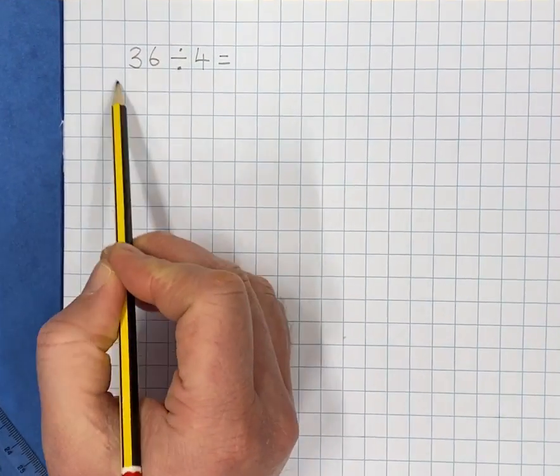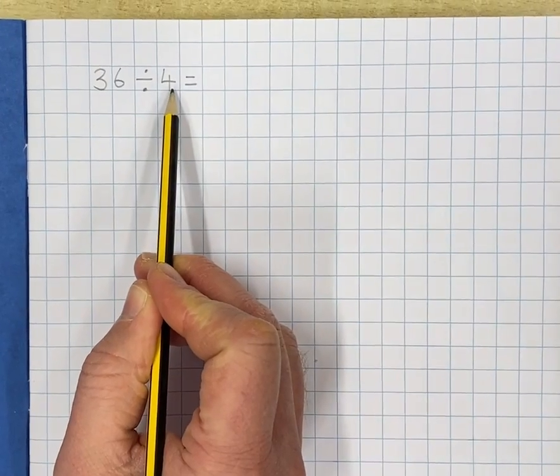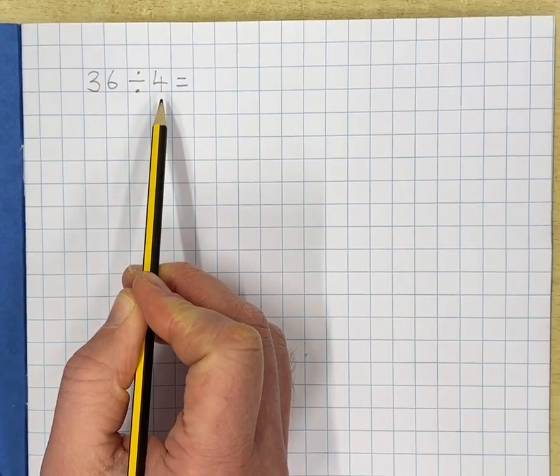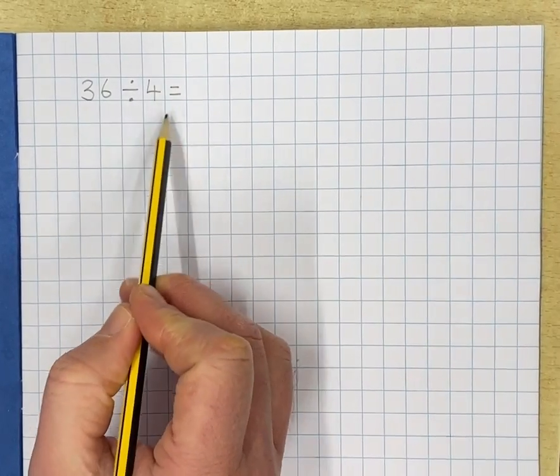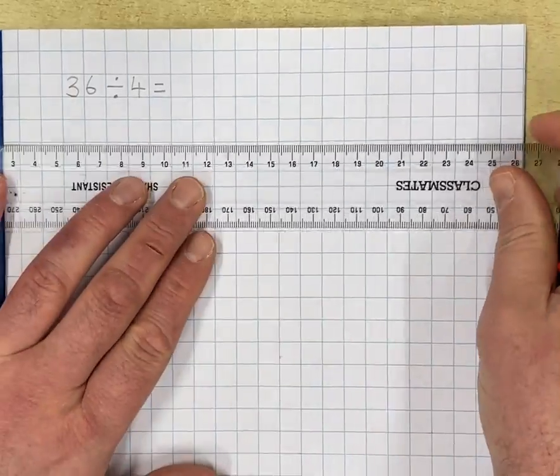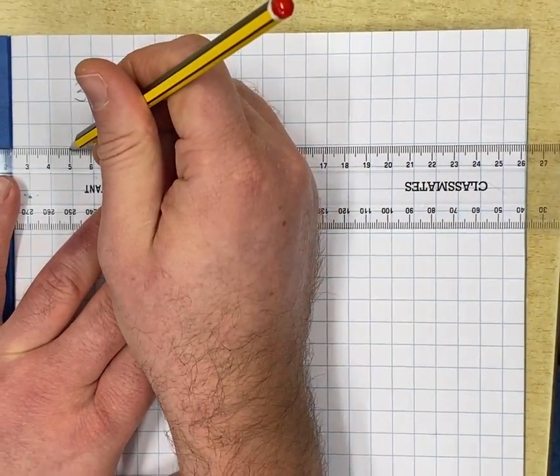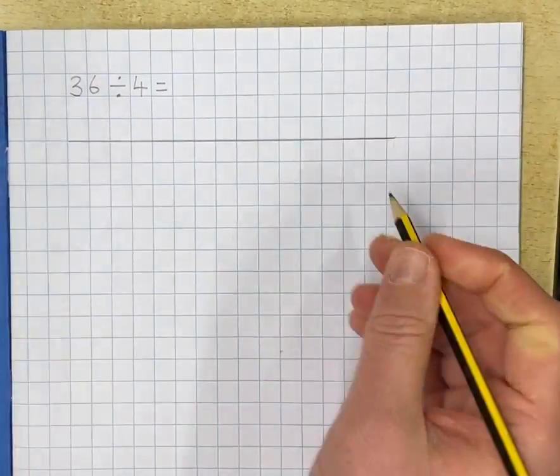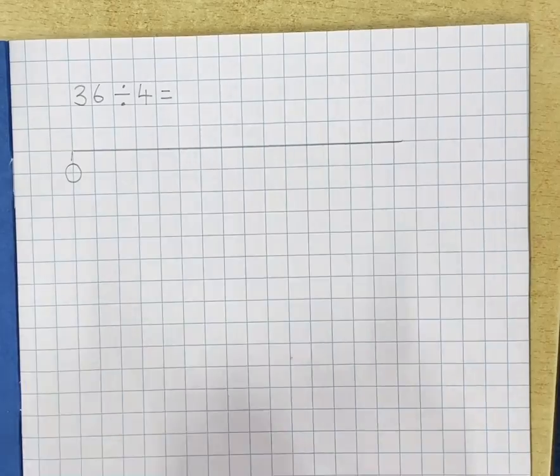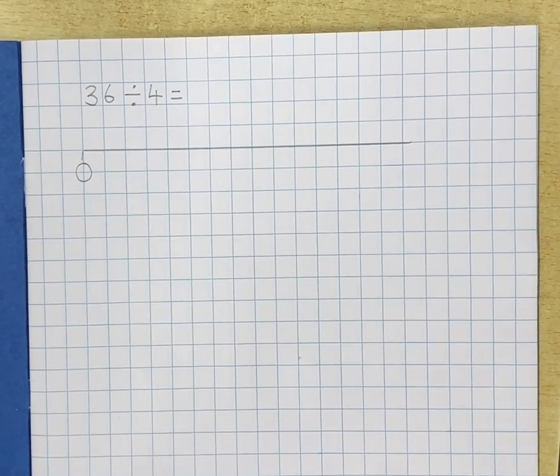Okay, so we're working out 36 divided by 4 on a number line. The first thing I'm going to do is restate the calculation. How many 4's fit into 36? I'm going to draw a number line. Use the line of your book. I'm going to label this zero. I'm going to show you three different ways of using your number line.